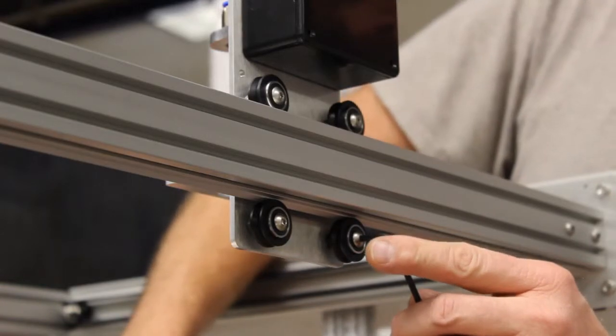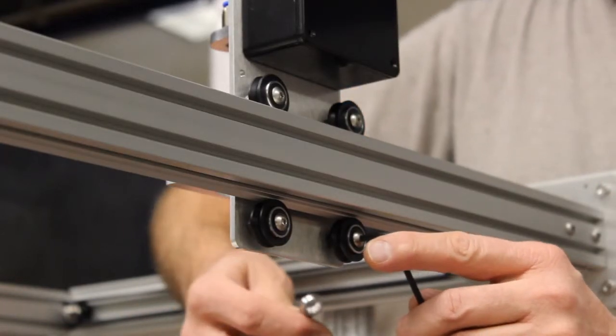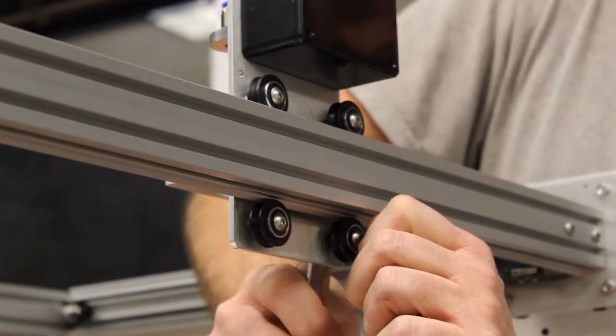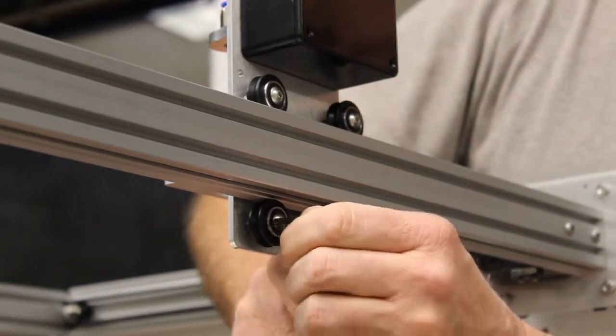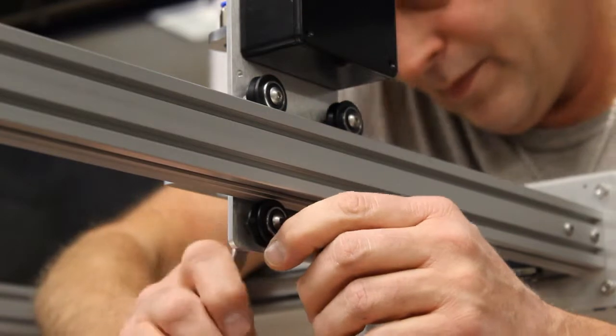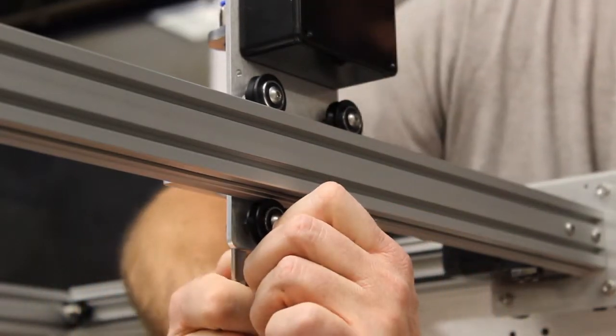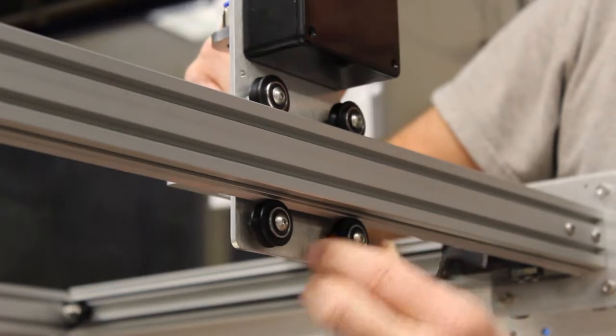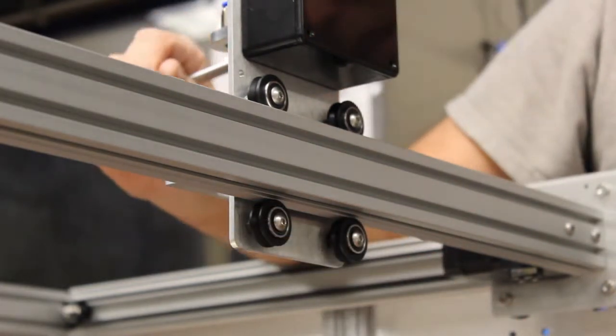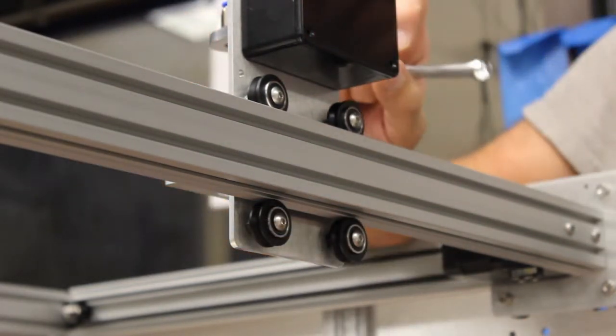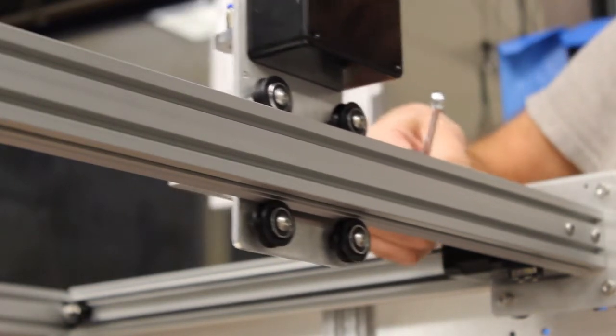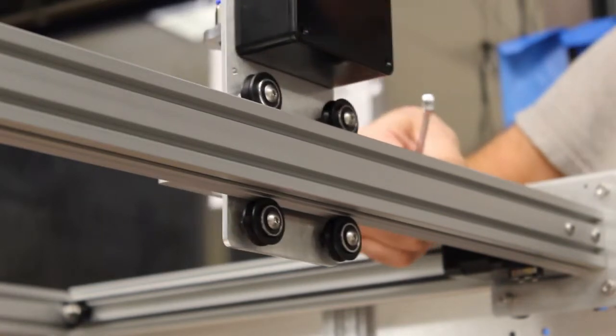After you've adjusted your eccentrics, what you want to do is come back and do a final torque on your v-groove wheels, the screws and the nuts there. You're going to check it again to make sure you still have good contact and that you still have a little pressure on each one of the wheels, and that they will move freely without binding up.